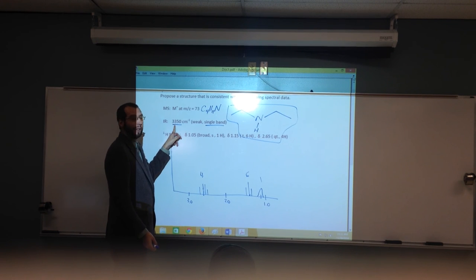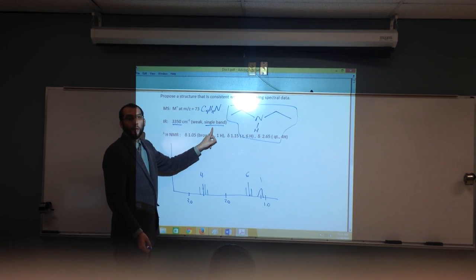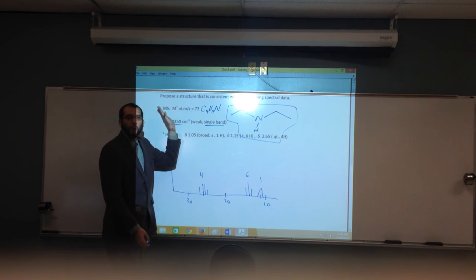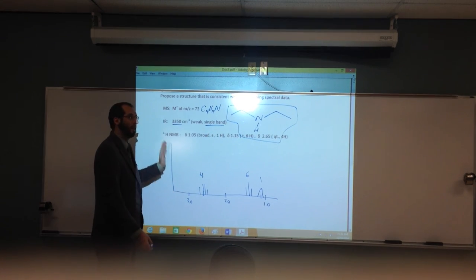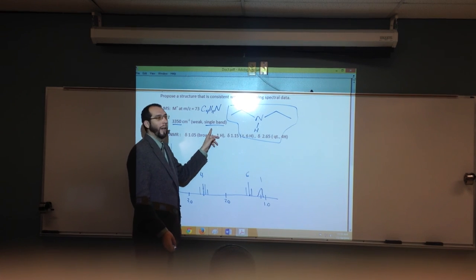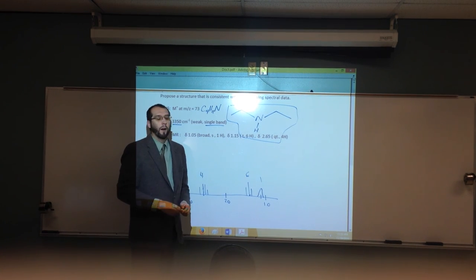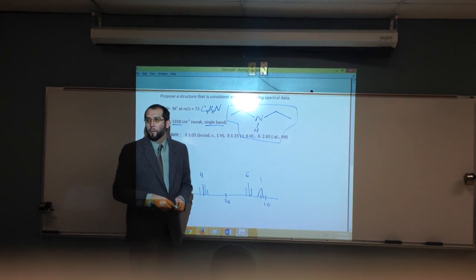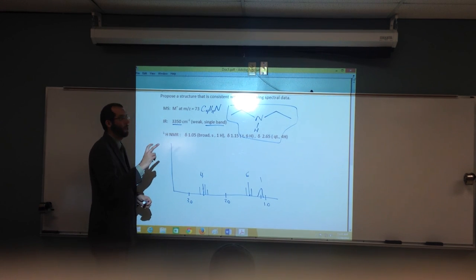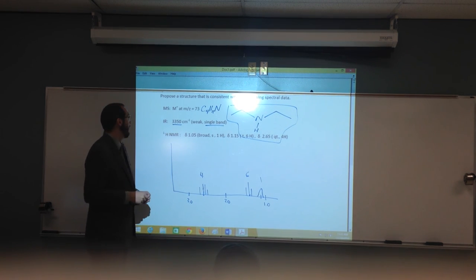If we have the odd, remember there's the nitrogen in it. At 3350, we're either going to have a single or double band. The weak tells us that it's the NH bond as opposed to like the OH bond, which would be very strong. But a single band, that's telling us that it's a secondary amine as opposed to a primary, because if it was two bands, then we'd have a primary amine.